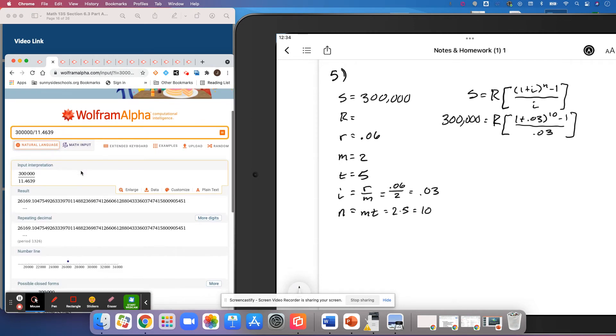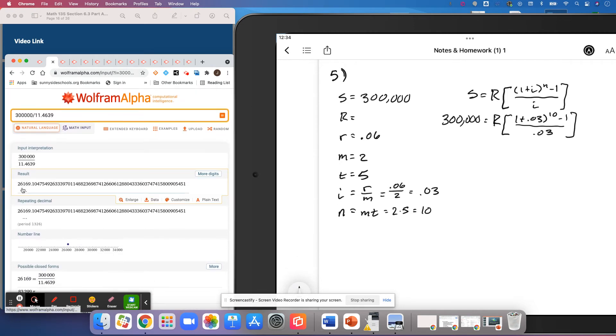And so they need to make semi-annual payments of $26,000. So R is $26,169.10. So the payments must be $26,169.10.